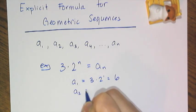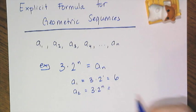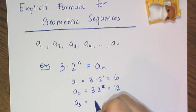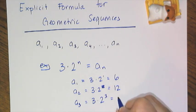If I want to find the second term, I substitute in a 2 for n, which gives me 3 times 4, which is 12. And if I want to find the third term, I do 3 times 2 to the third power, which would be 24.